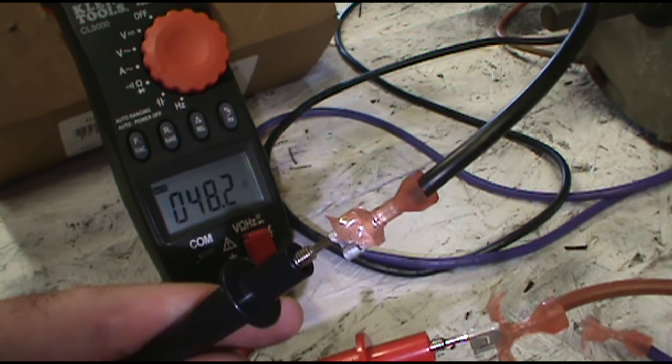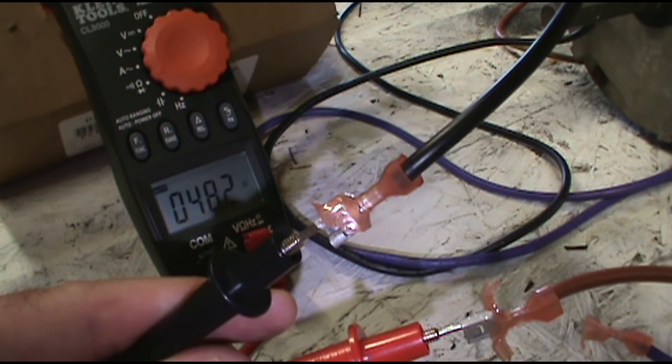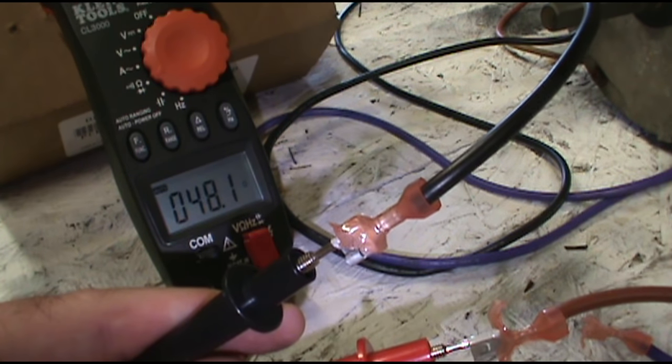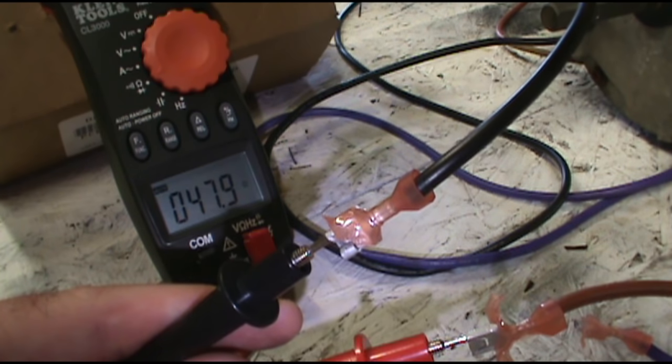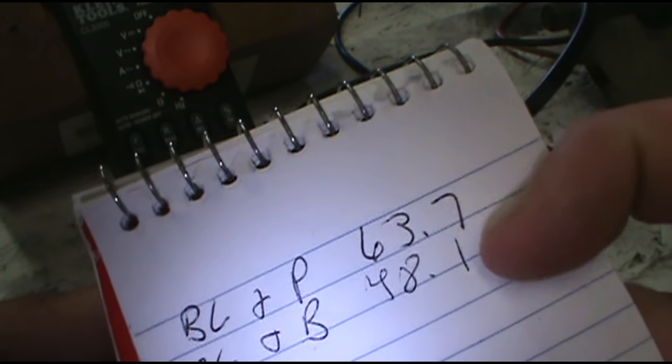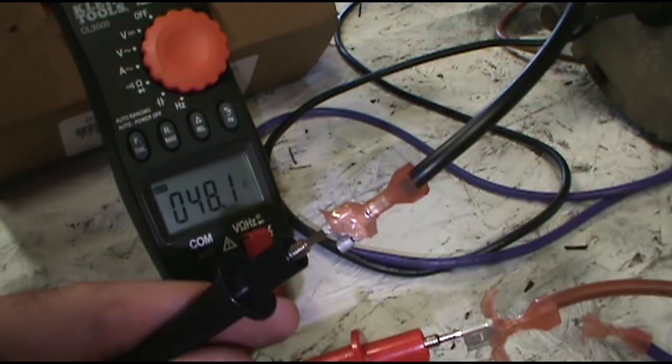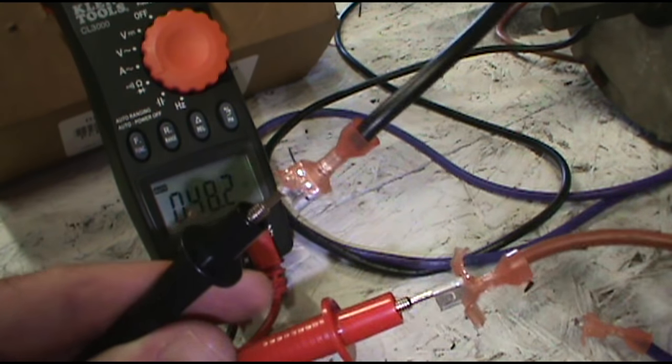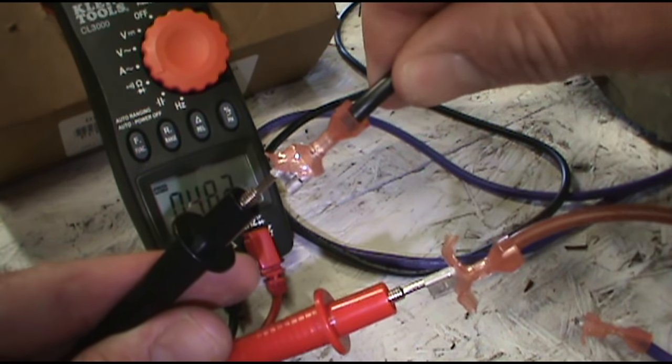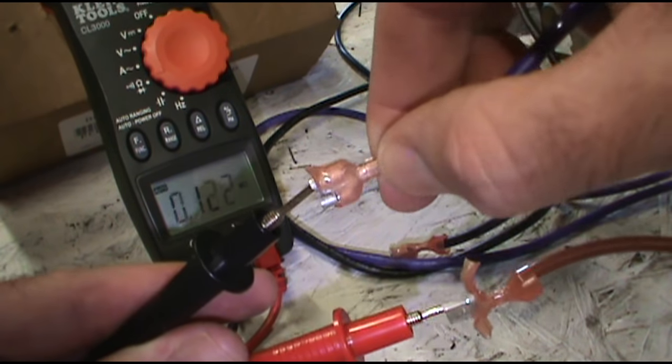BL and brown, 48.1. Now these two numbers here will need to add up to our purple and brown wires. So you can leave the brown on the red lead, pull the black off, and stick the purple on.